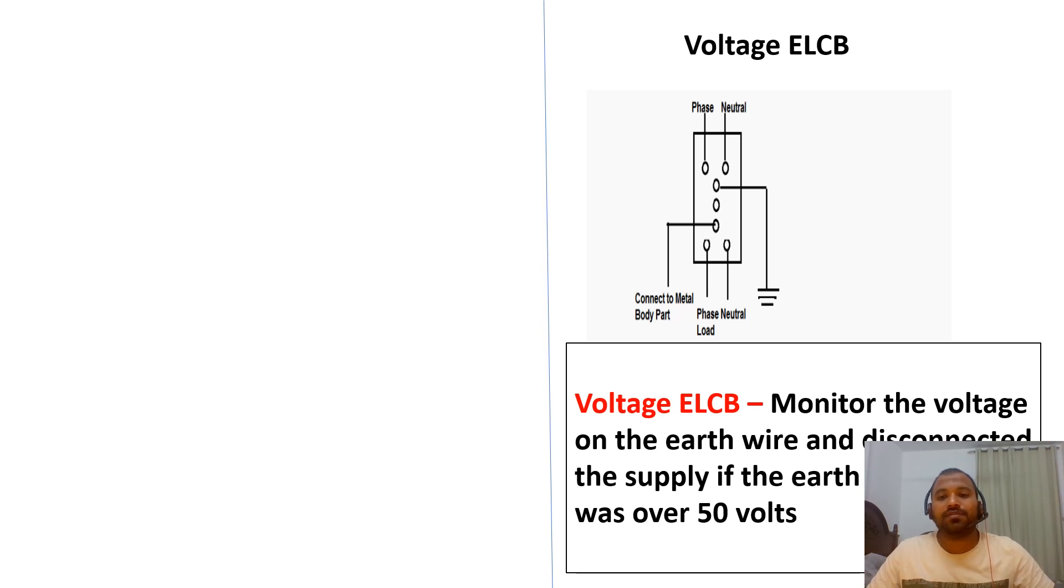These ELCBs monitor the voltage on the earth wire. This earth wire voltage is monitored. When there is a leakage current which exceeds 50 volts, then this voltage ELCB senses it and will trip the breaker.